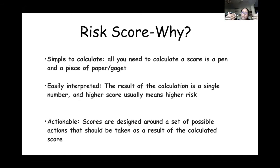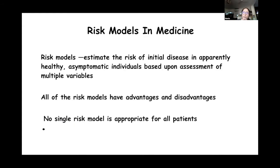Very importantly, risk scoring gives you a lead for action — it is actionable. These tools are designed around a set of possible actions that should be taken as a result of the calculated score. In medicine, these models estimate the risks of initial disease in apparently healthy, asymptomatic individuals based on assessment of multiple variables.